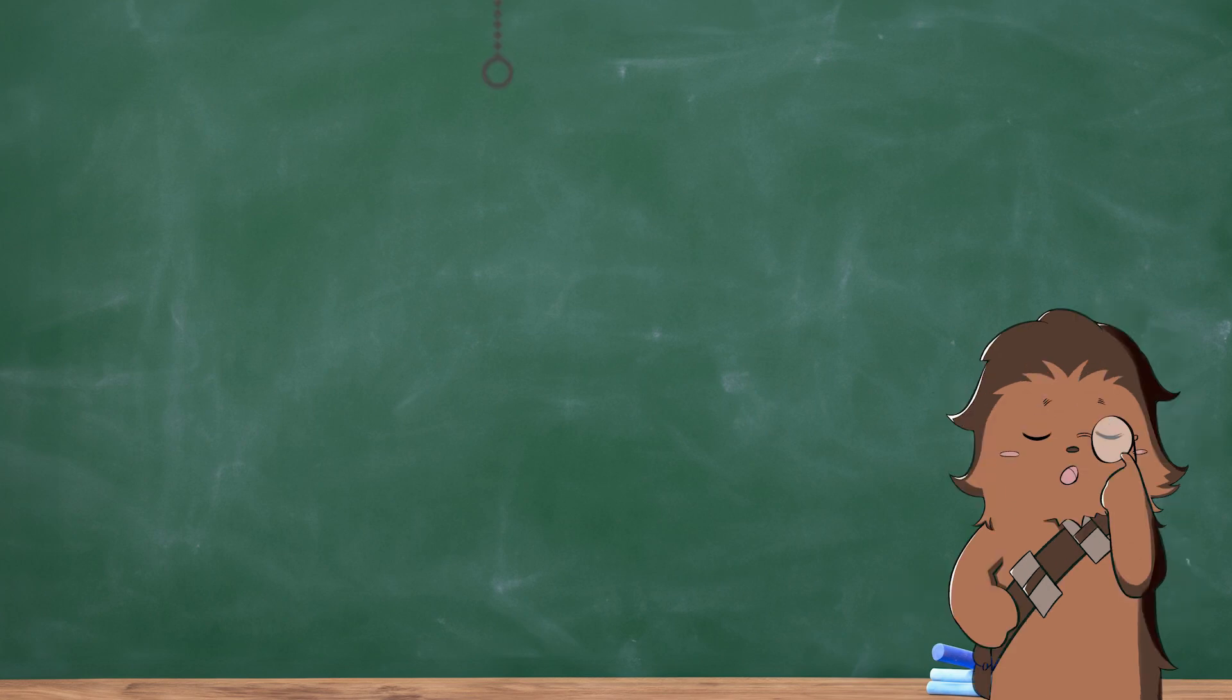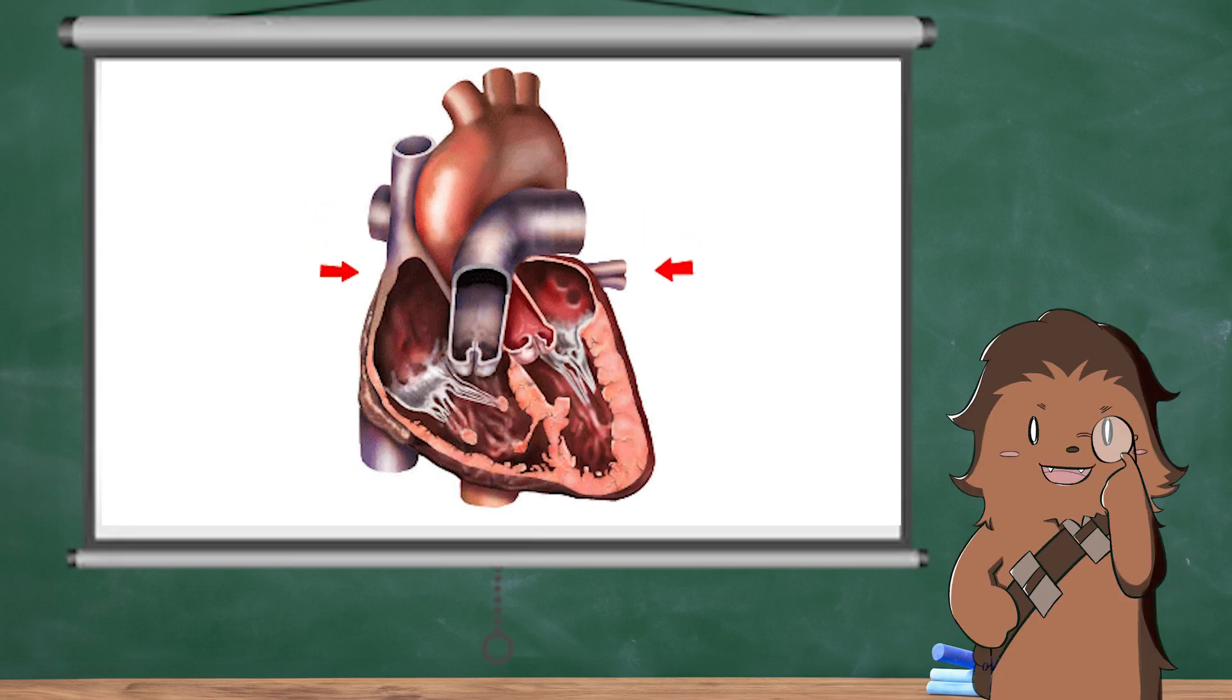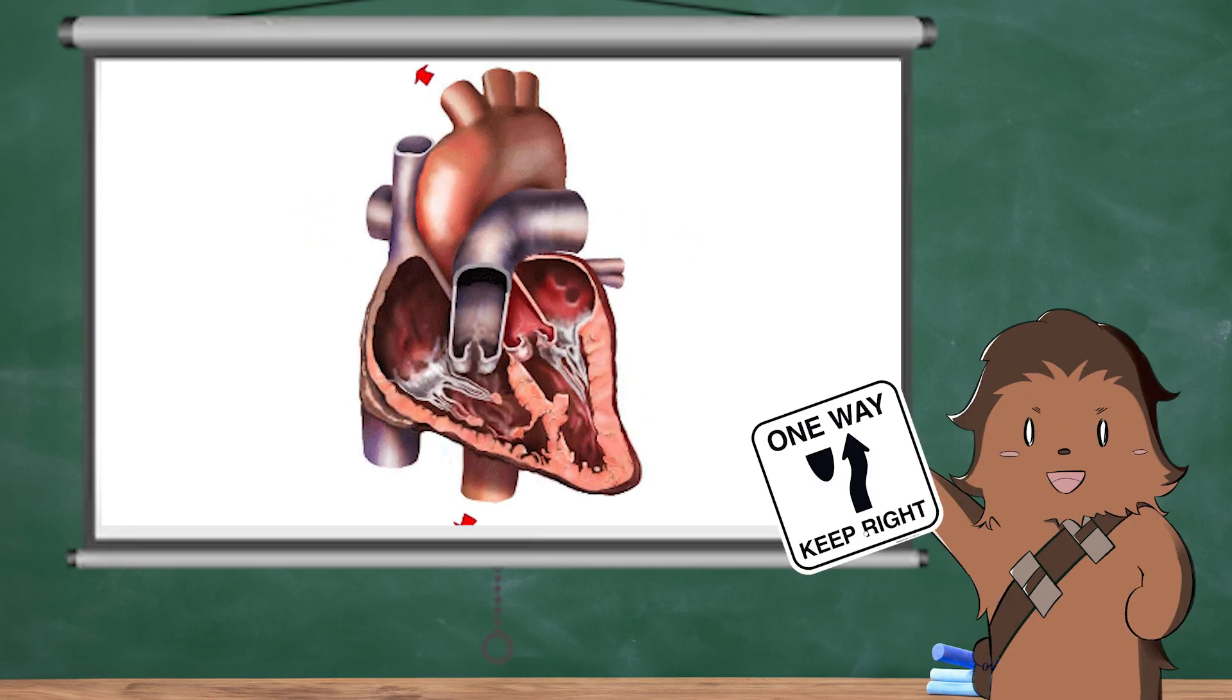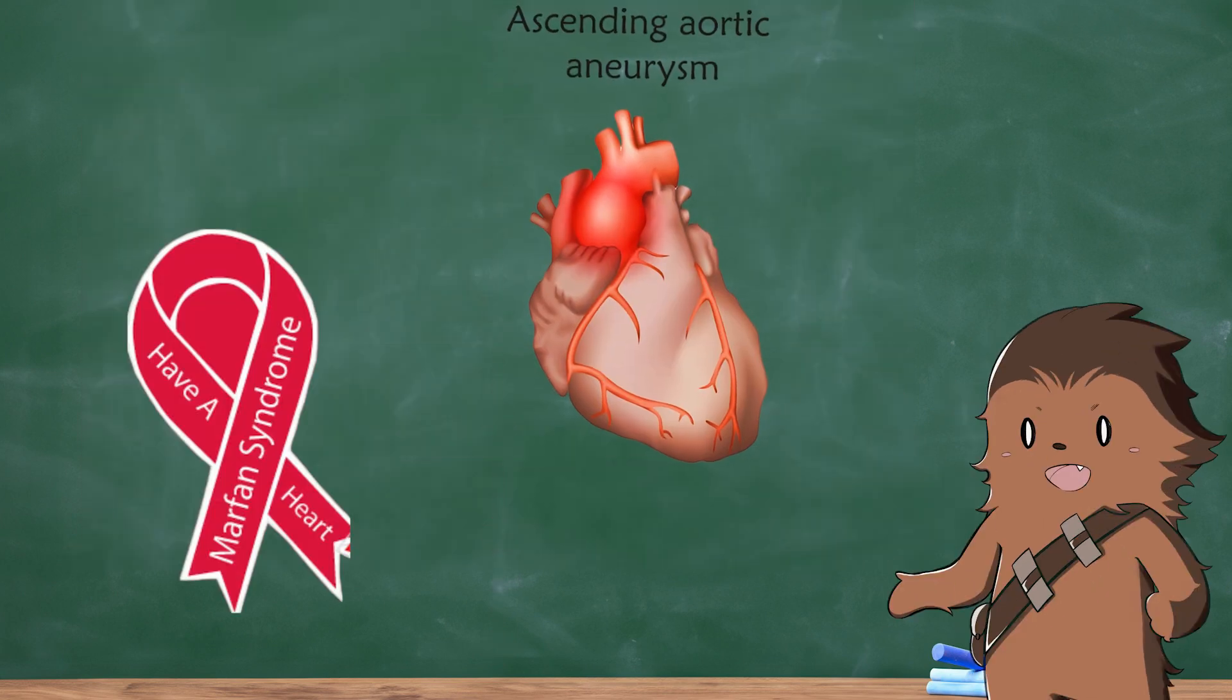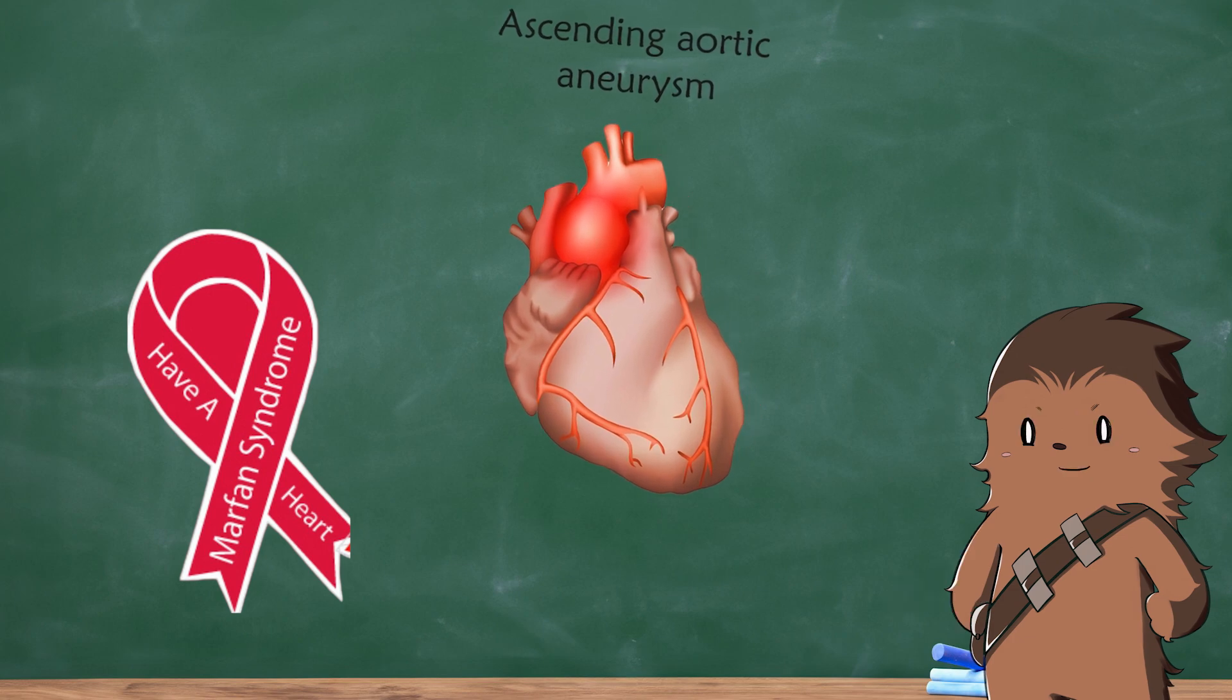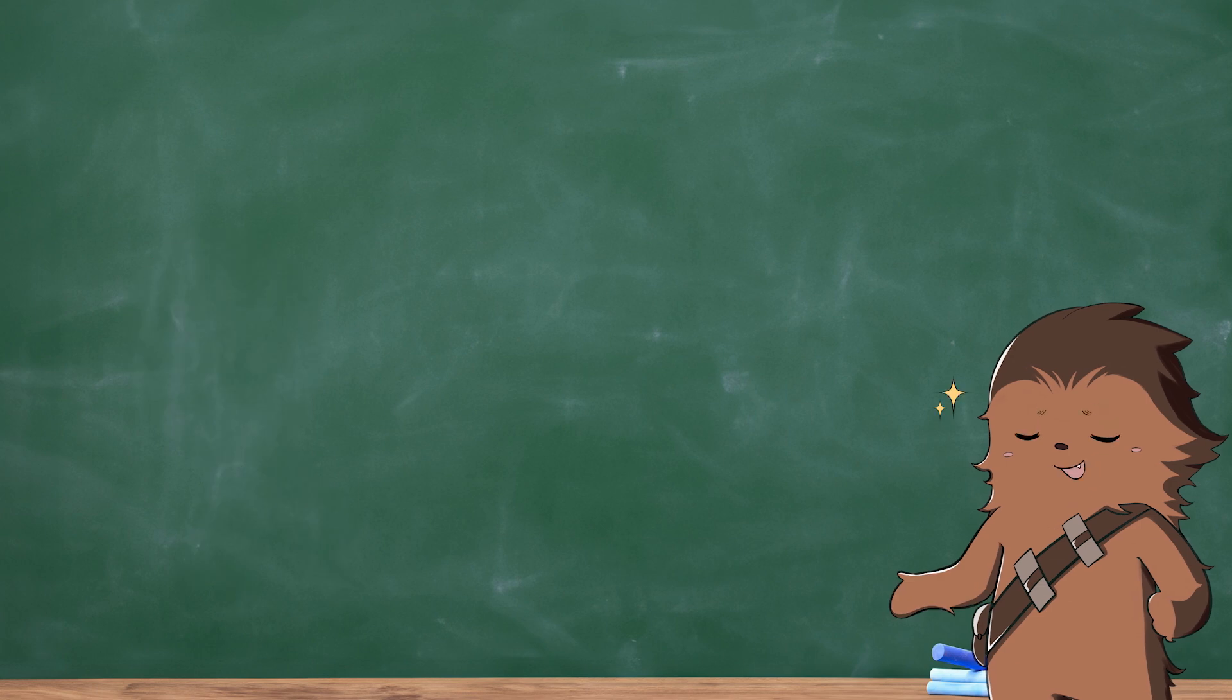It can also affect your heart valves, which are flaps that separate into four chambers of your heart and keep blood flowing in the right direction. An aneurysm in the aortic root part of your ascending aorta, the section closest to your heart, is specific to Marfan syndrome.